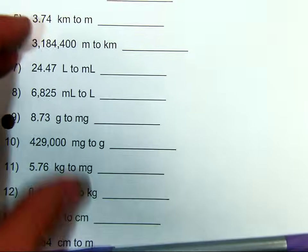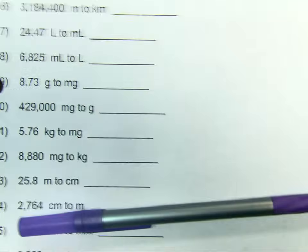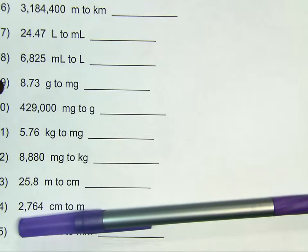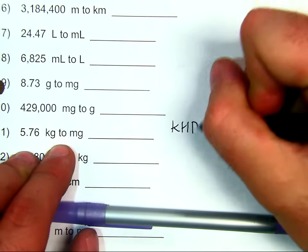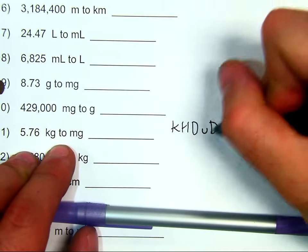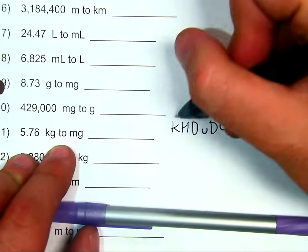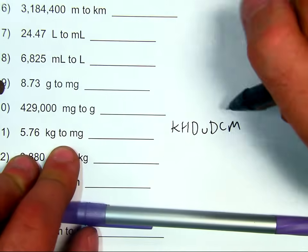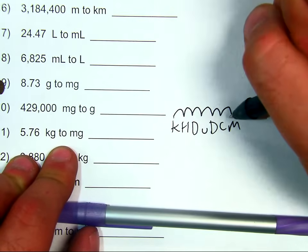Now, what if I have something that's kind of ridiculous, like number 11? I have 5.76 kilograms to milligrams. I have King Henry died unexpectedly drinking chocolate milk. I'm going to go from kilograms all the way to milligrams over here. So, I'm going one, two, three, four, five, six spaces to the right.